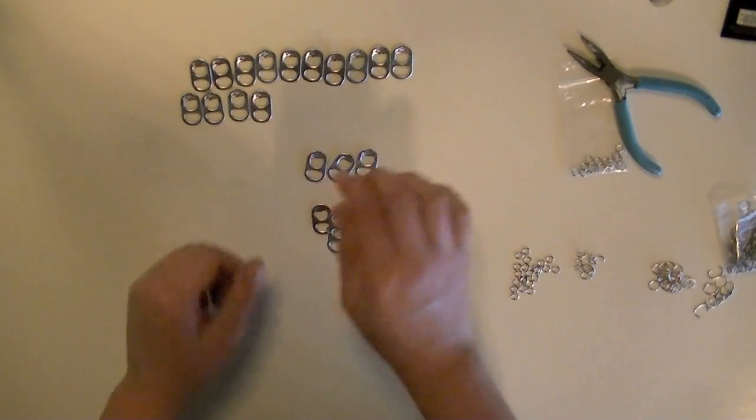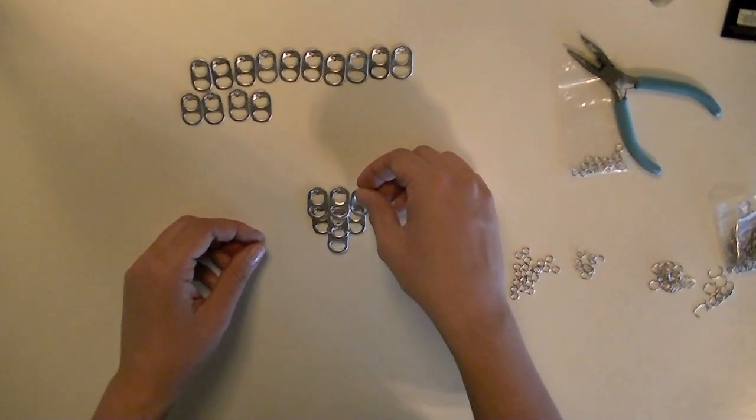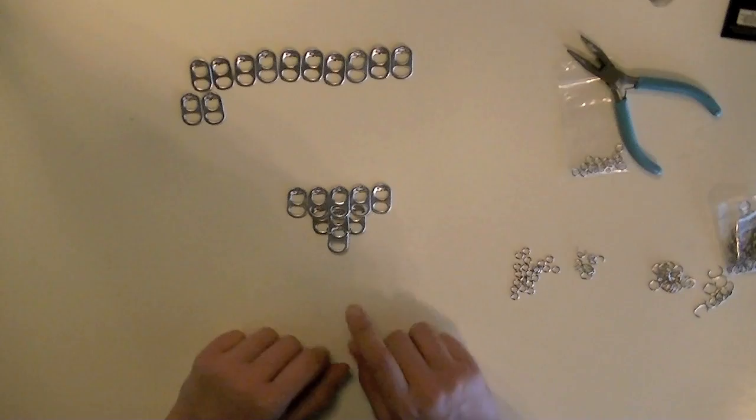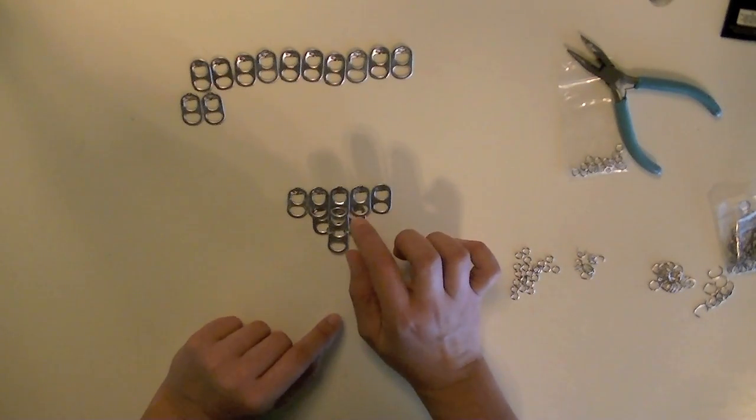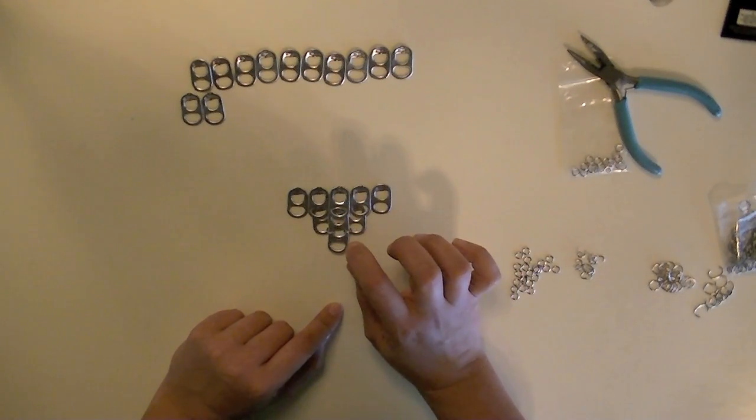Next we're going to add three more pop tabs on top of our first three, and then two additional ones on each side. For this I'm going to use the bigger jump rings because at one point I'm going to have to be connecting four pop tabs at once. Let me show you what I mean.